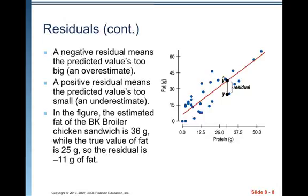A negative residual means the predicted value is too big, an overestimate. If you look over at the picture, you've got one there, because it's y minus y-hat, and that gives you an overestimate. The y-hat value is bigger than the y-value, so when you subtract it, you end up with a negative number.